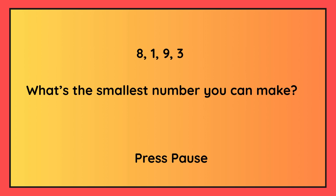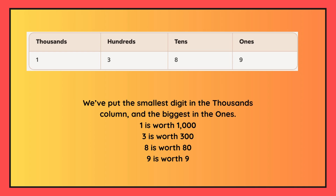What's the smallest number you can make? The answer is one thousand three hundred and eighty-nine. You should have put the smallest number in the thousands column, which is one, three in the hundreds column, eight in the tens column and nine in the ones column.